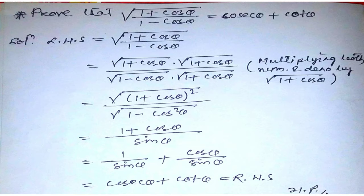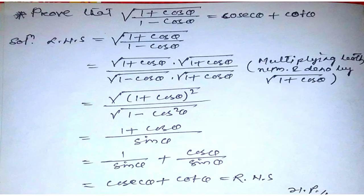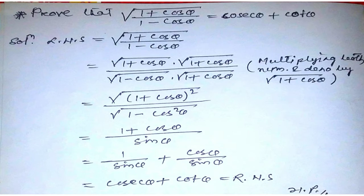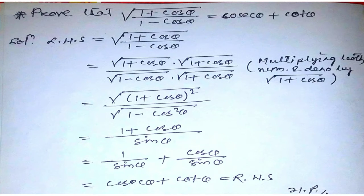Using the identity (a + b)(a − b) = a² − b², the denominator becomes √(1 − cos²θ) = sinθ. The numerator simplifies to (1 + cosθ) as the square and root cancel. Breaking this apart gives 1/sinθ + cosθ/sinθ, which equals cosecθ + cotθ — the right hand side. Hence proved.